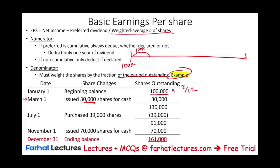From January 1st till March 1st they had 100,000 shares, so I'm going to take this 100,000 and prorate it over the fraction of the year that it was outstanding — which is 2/12 of the year. On March 1st they added 30,000 shares, bringing them to 130,000 shares. They had 130,000 from March till July — all of March, April, May, and June — so four months. We take 130,000 multiplied by 4/12.